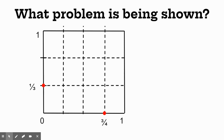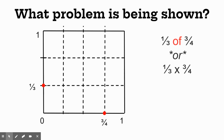Go ahead and solve that — what is the answer to one-third times three-fourths? One-third times three-fourths is three-twelfths.